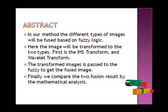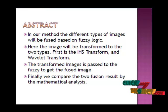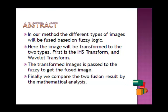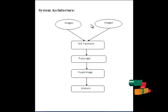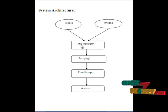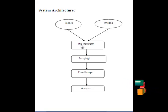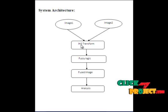After that, we analyze the fused image by computing mathematical values. This is the flow of our project. Here we provide two images as input. The provided image is passed to the IHS transform, where we convert the image to IHS color space. IHS stands for Intensity, Hue, and Saturation.